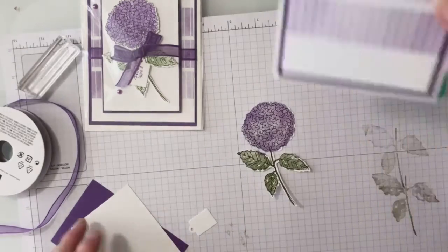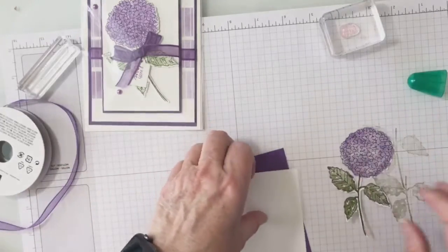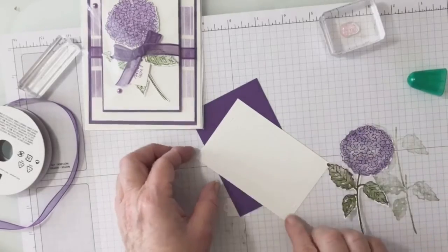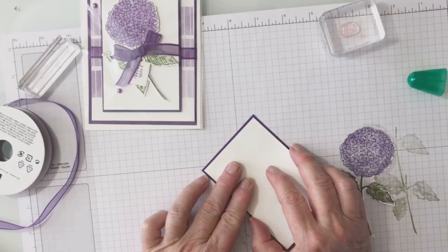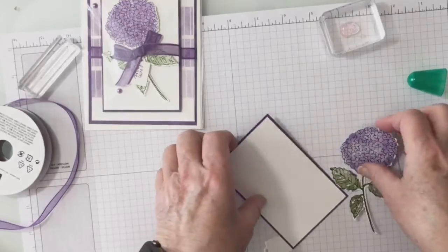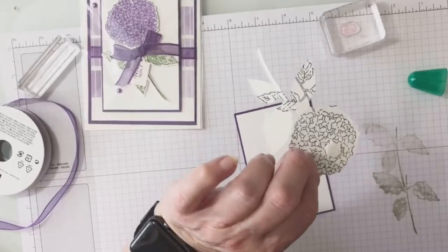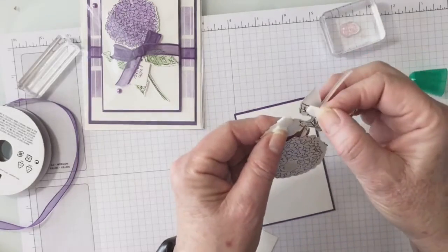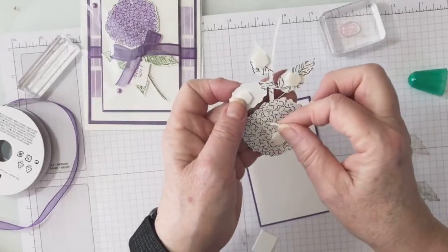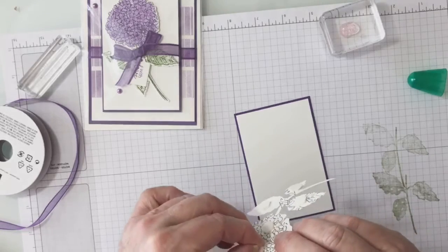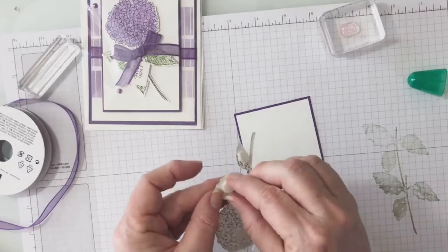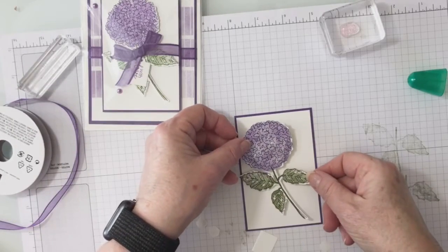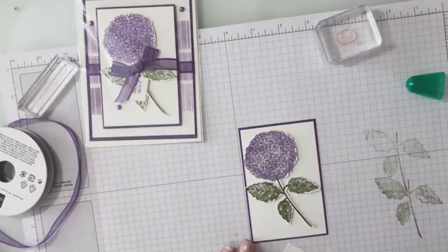Let's get our card back in here and I'm going to attach the hydrangea to my piece of white cardstock here. But let me attach that to my gorgeous grape first, and then I'm going to put this on here. Whoa, I got a few dimensionals there. Okay, let's just put it there. Let's put that on there just like that.